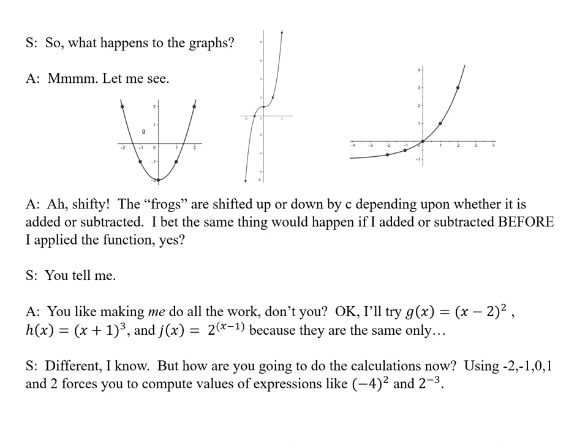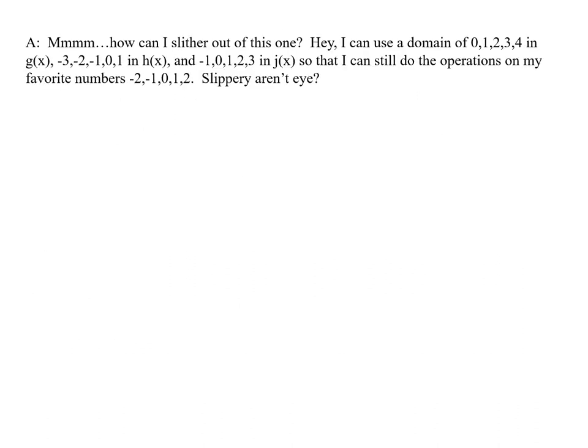But how are you going to do the calculations now? Using -2, -1, 0, 1, and 2 forces you to compute values of expressions like (-4)² and 2^(-3). Hmm. How can I slither out of this one? Hey, I can use a domain of 0, 1, 2, 3, 4 in g(x). -3, -2, -1, 0, 1 in h(x). And -1, 0, 1, 2, 3 in j(x). So that I can still do the operations on my favorite numbers. -2, -1, 0, 1, 2. Slippery, aren't I?